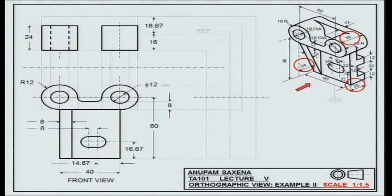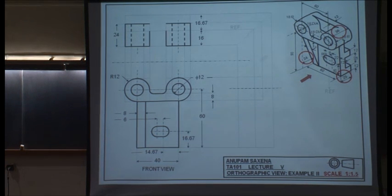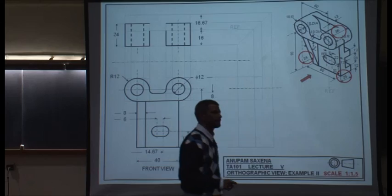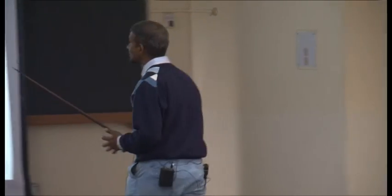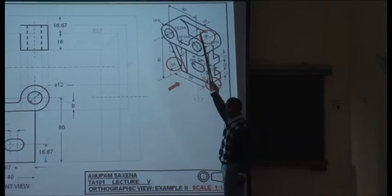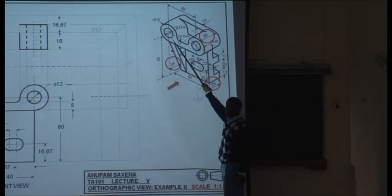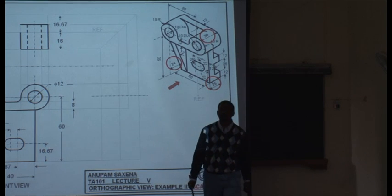This is an example that demonstrates that you are going to be missing quite a few lines — not just one or two, but quite a few. Would you see this line? What would this edge correspond to? This one? No — this would correspond to this over here.